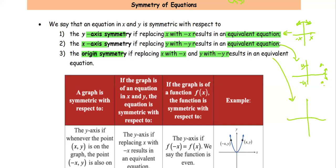If you have x and y in one quadrant, or in the first quadrant, when you replace x with negative x and y with negative y, you get the equivalent equation.